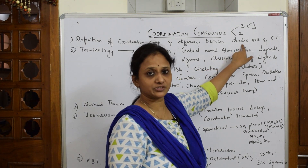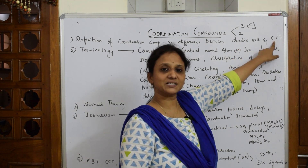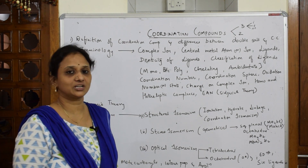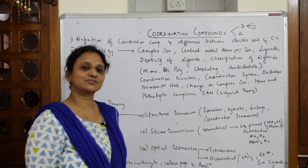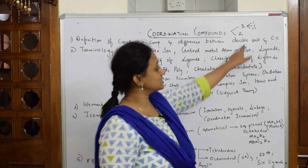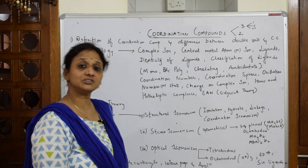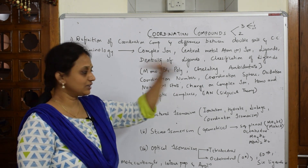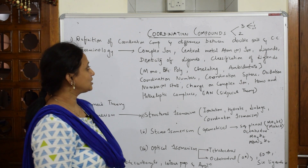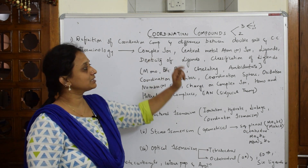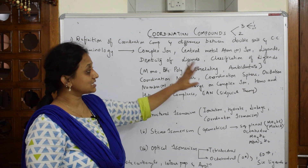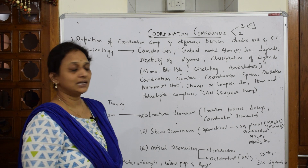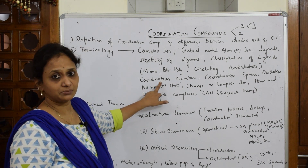In coordination compounds, I'm going to teach you the differences between a complex ion and a double salt — that is the first important question. We'll also learn the definition of coordination compounds, and after that, the important terminologies: complex ion, central metal atoms, ligands, denticity of ligands, and classification of ligands.